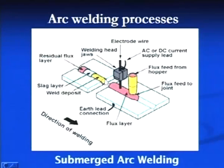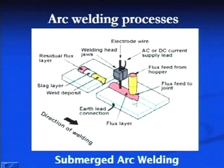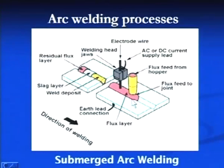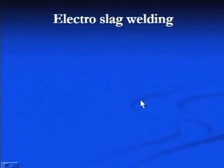The next welding process is submerged arc welding, where the joint is produced by developing an arc between the base metal and a consumable electrode. The arc is submerged below the granular flux, which becomes fusible and melts, surrounding the arc and the molten weld pool to protect it from the atmosphere. The molten metal is then allowed to solidify to produce a sound joint.